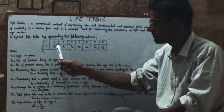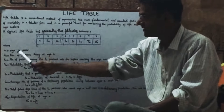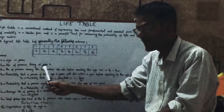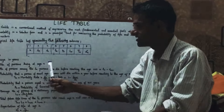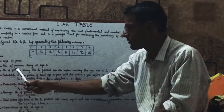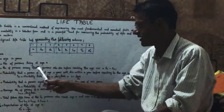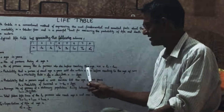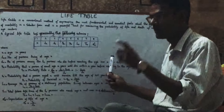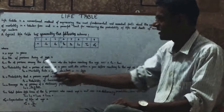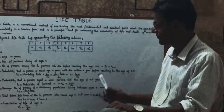In the second column, LX — LX is the number of persons living at age X. DX is the number of persons among the LX persons who died before reaching age X plus 1, and DX is computed as LX minus LX plus 1.